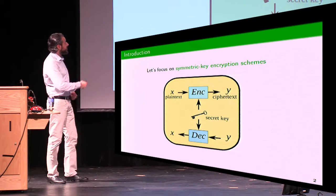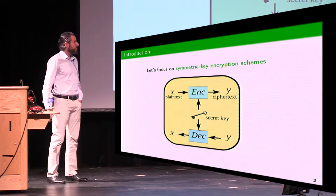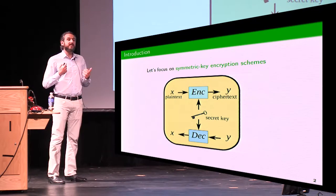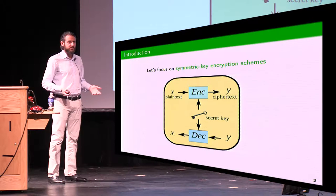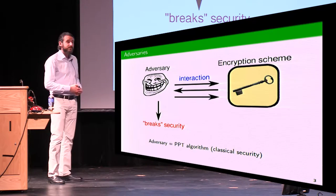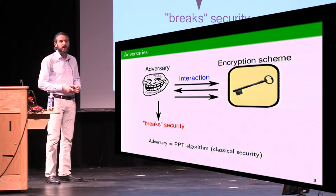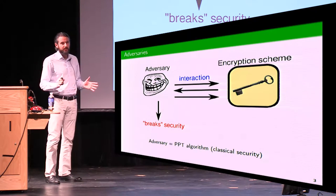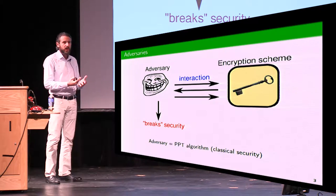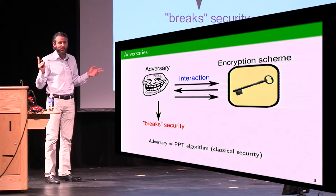This primitive is classical, so whenever you see the yellow box, it's a classical encryption scheme. What can we say about the security of these encryption primitives? Usually, when we model security of these schemes, we have something like this in mind. We have some adversary, and since we look at computational security here, we consider the adversary to be a polynomially bounded machine. The adversary interacts in a classical way with the scheme, and after some interaction, it breaks the security of the scheme.